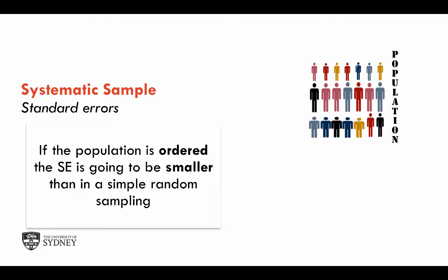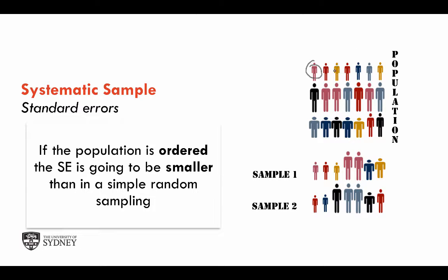If we draw one first sample selecting the first individual and then sampling every third, then draw another sample starting at individual two, then another starting at individual three, and so on — if you look at the samples generated from this ordered population and think about the means of a certain variable, you can see that these samples are all very similar. They are going to produce very similar estimates, which means the variability across estimates from different samples is going to be very small. This does not happen in simple random sampling.